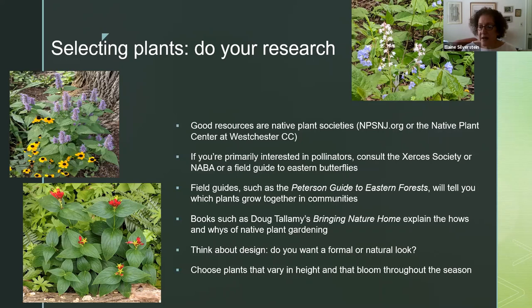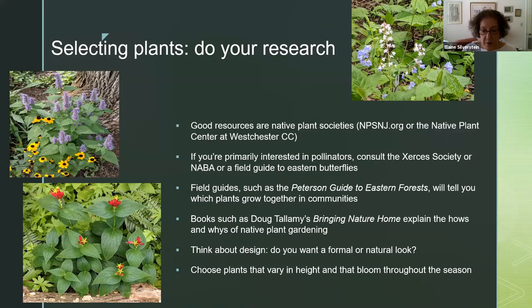There are great reference books like Doug Tallamy's two books — this is all on your resource list so you don't need to write it down. Once you do that research, you start to think about design: do you want a formal look, a very natural look? You can do an English cottage garden or a Japanese style garden — all of these are possible with native plants. When putting your list together, choose plants that vary in height and bloom throughout the season, and think about layers if you have room for shrubs as well.